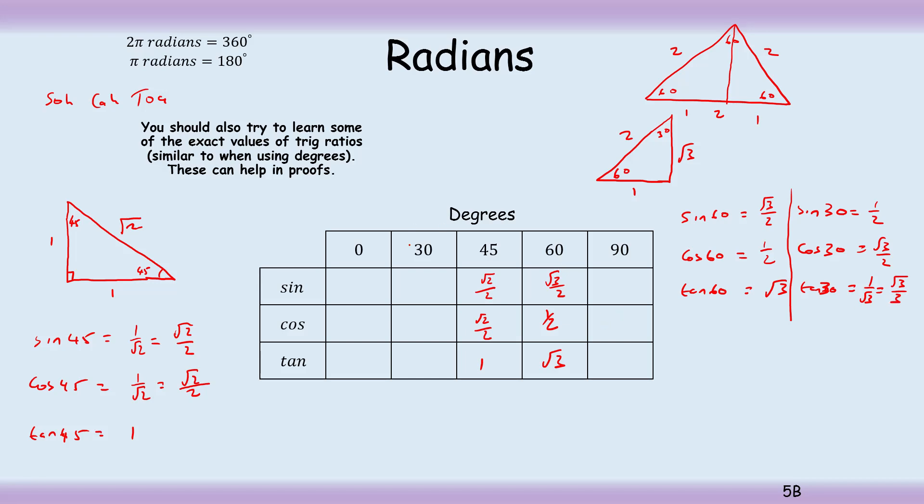And if we rationalize the denominator, we get root 3 over 3. So we can fill that in our table here: a half, root 3 over 2, and root 3 over 3.